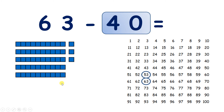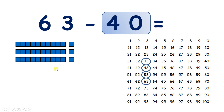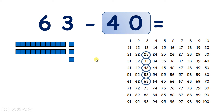So take away 10, and we now have 53. Take away another 10, that leaves us with 43. Take another 10, and we have 33, so we've taken away 3 tens. So let's take away 1 more 10, and that leaves us with 23.